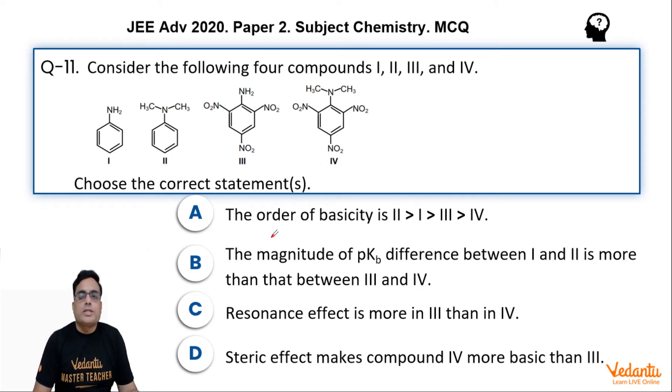Option A says the order of basicity is II > I > III > IV. Option B says the magnitude of pKb difference between I and II is more than that between III and IV. Option C is resonance effect is more in III than in IV. And option D is steric effect makes compound IV more basic than III. So let us start now.